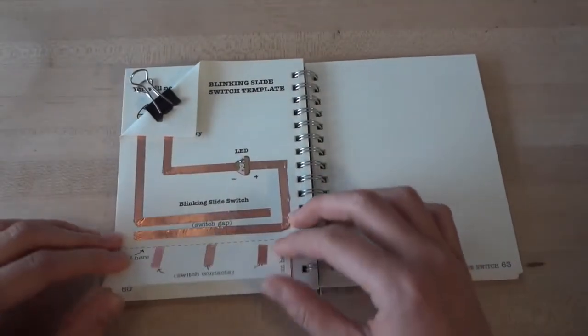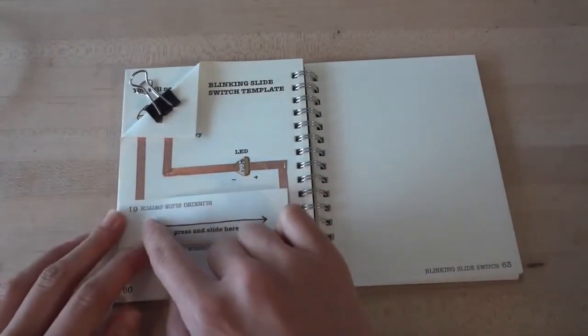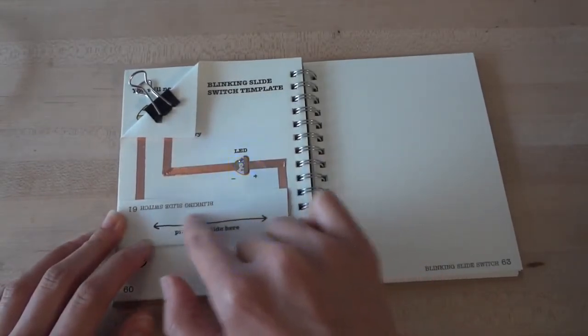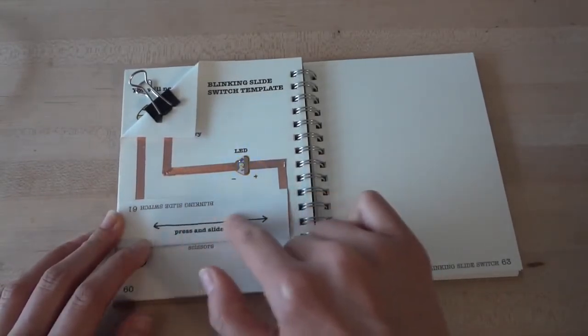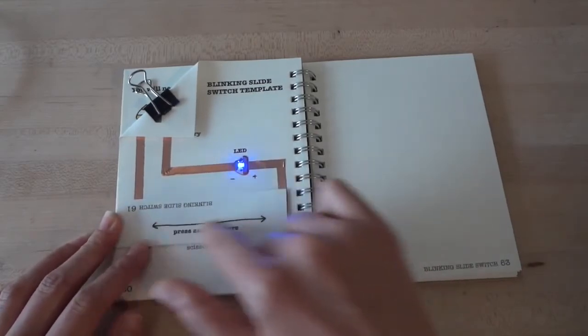Finally, fold the flap along the dotted line again. Now, when you press against certain points in this flap, you turn on the switch. When you slide your finger across, you create a blinking pattern.